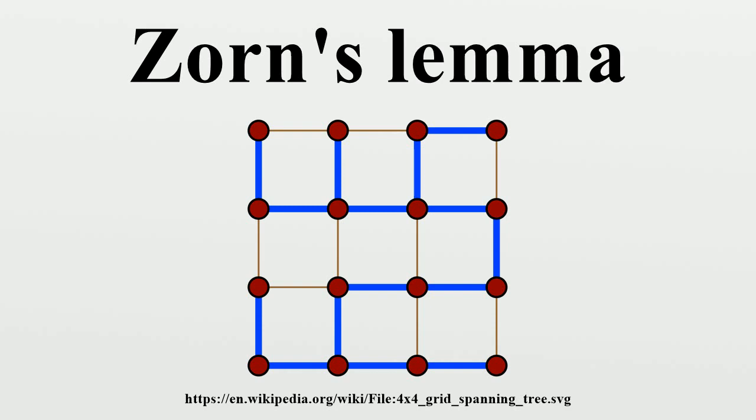Any such totally ordered set T is called a chain. Such a set T has an upper bound U in P if T ≤ U for all T in T. Note that U is an element of P but need not be an element of T.